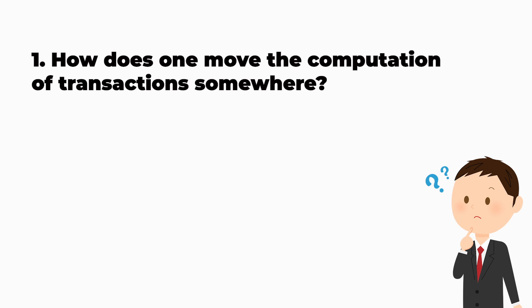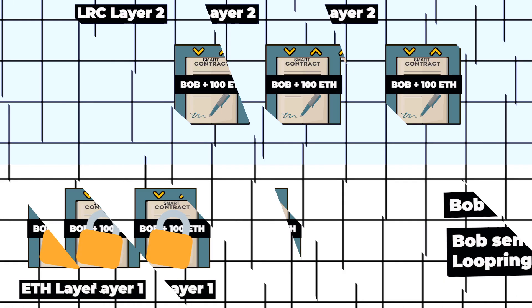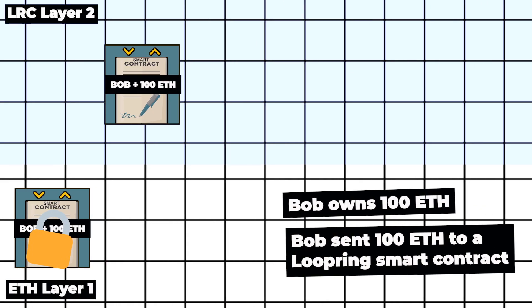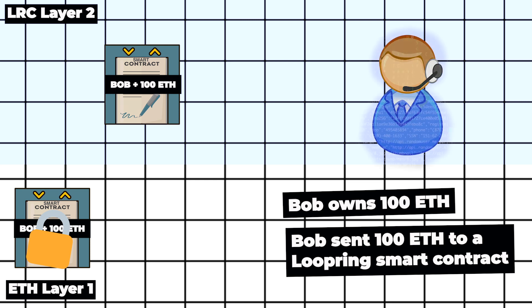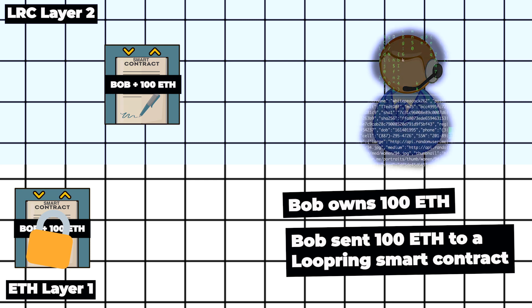The second question is where would the transactions be processed and who would process these transactions? Well, it happens in layer 2 and is carried out by the Loopring operator, which is managed by the Loopring team.